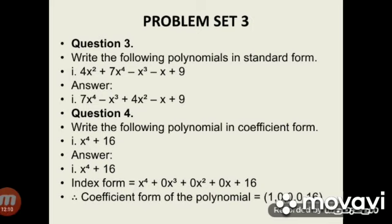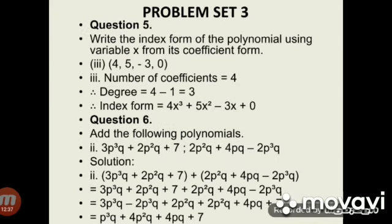Question 4: Write the following polynomial in coefficient form. Subdivision 1: x raised to 4 plus 16. The index form is x raised to 4 plus 0 into x cubed plus 0 into x squared plus 0 into x plus 16. Therefore the coefficient form of the polynomial is (1, 0, 0, 0, 16).